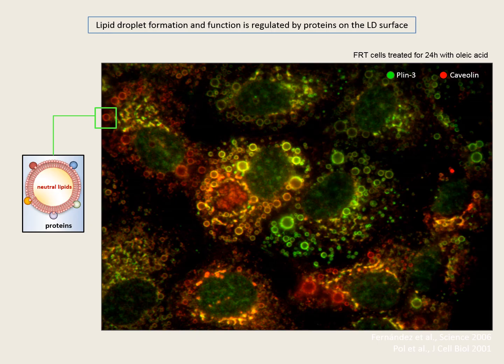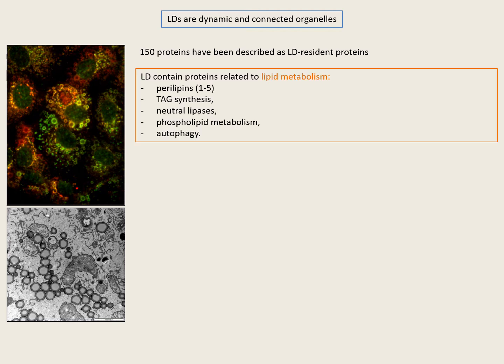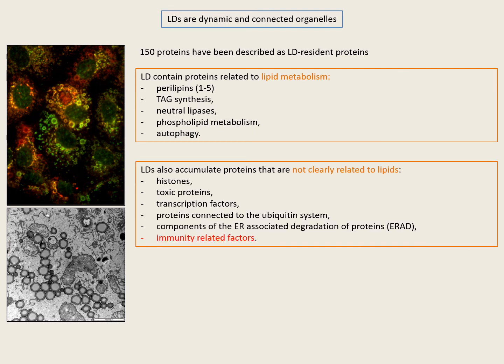All these functions are tightly regulated by a specific subset of proteins accumulated on the lipid droplet surface. Although for a long time lipid droplets were considered inert fatty inclusions, today we know they are authentic organelles. Over 150 proteins have been described as bona fide lipid droplet proteins, including perilipins, which are exclusive to this organelle. Most proteins relate to lipid synthesis and metabolism, including autophagy, but lipid droplets also accumulate proteins not directly related to lipids, such as histones, toxic proteins, or transcription factors, suggesting their functions go beyond lipids.